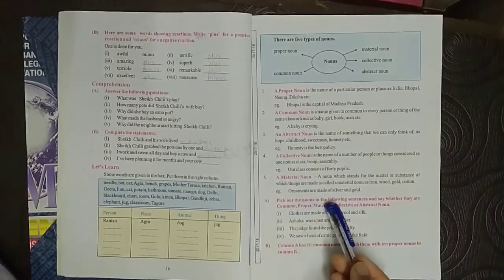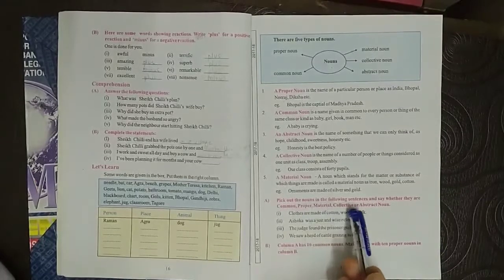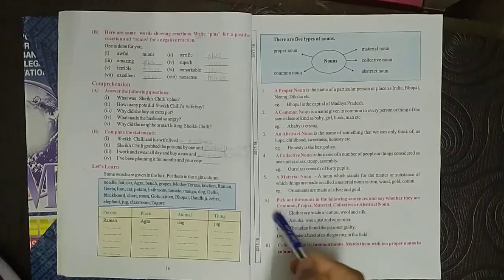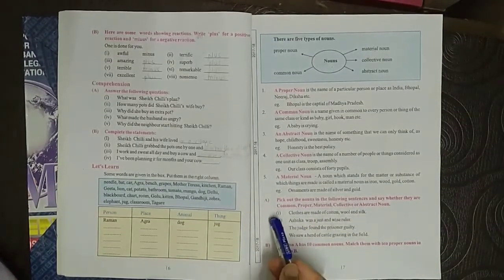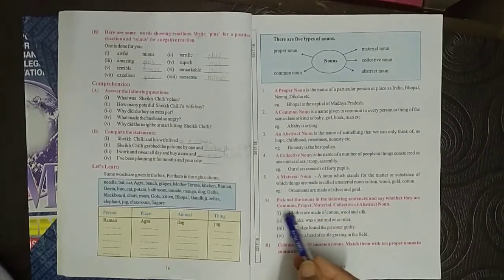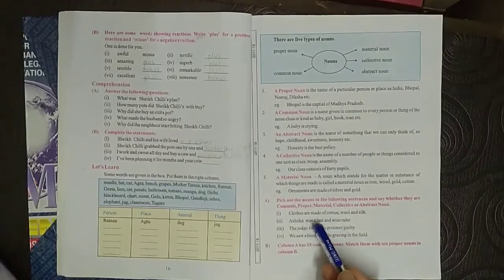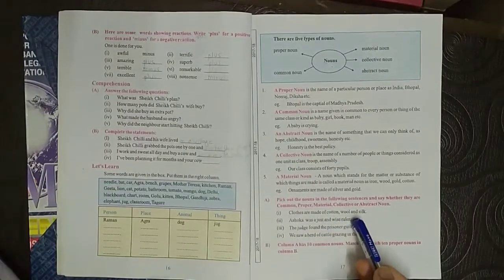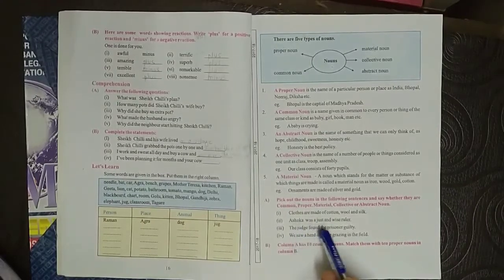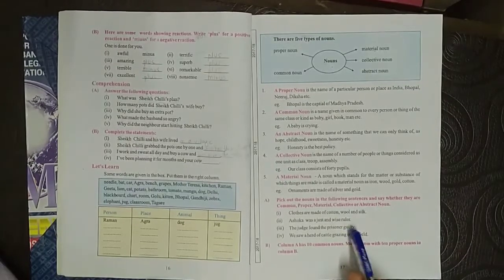Exercise: pick out the nouns in the following sentences and say whether they are common, proper, material, collective, or abstract. First one: clothes are made of cotton, wool, and silk. So here this one is material noun. Second: Ashoka was a just and wise ruler. This one is proper noun. The judge found the prisoner guilty, so here the word guilty is an abstract noun.